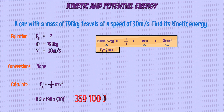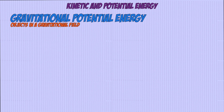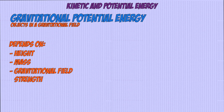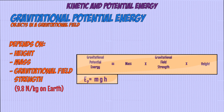The second type of energy you need to know the equation for is gravitational potential energy, which depends on how high up an object is, its mass, and how strong gravity is on the planet it's on — which we call gravitational field strength. On Earth, this is 9.8 newtons per kilogram. The equation for this is mass times gravitational field strength times height, where gravitational potential energy is measured in joules, mass in kilograms, gravitational field strength is 9.8 newtons per kilogram on Earth, and height is measured in meters.